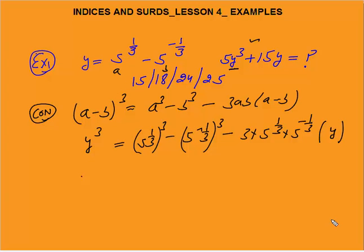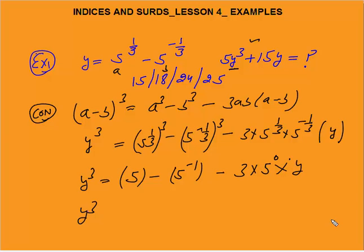So y³ equals 5^(1/3 × 3) minus 5^(-1/3 × 3) minus 3 times 5^(1/3 - 1/3) times y. When you open the bracket, 1/3 times 3 gives 1, and 5^(1/3 - 1/3) becomes 5^0. Since the bases are the same, the powers get added: 1/3 minus 1/3 is 0, and 5^0 equals 1.